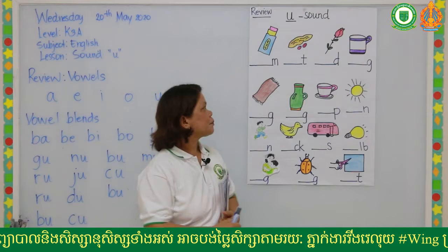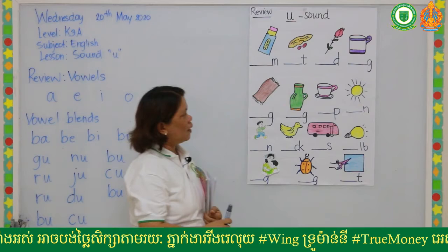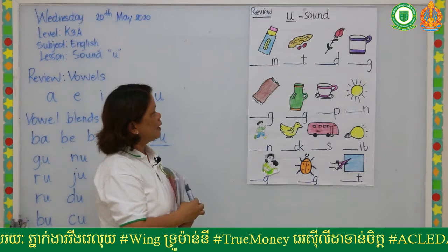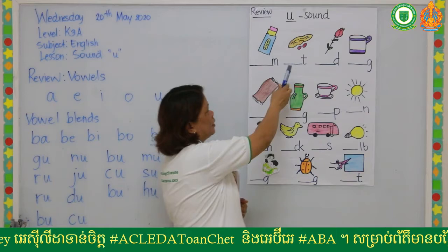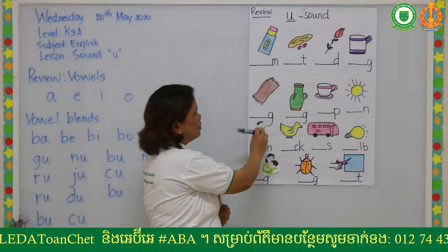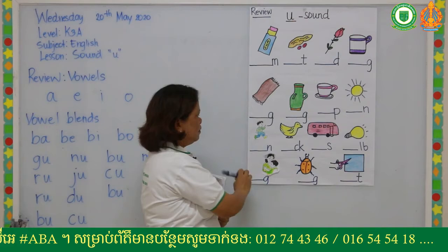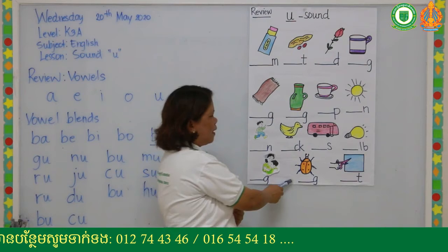Alright, so look at these pictures. I know that you know these pictures already. If you see these pictures, at least you know how to say it. So like number one — this is a gum. Number two: knot, bud, mug, rug, jug, cup, sun, run, duck, bus, bug, hug, and cut.